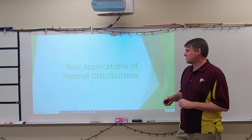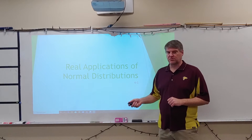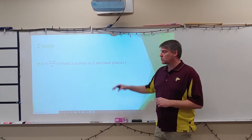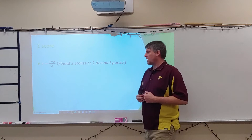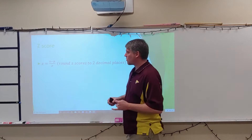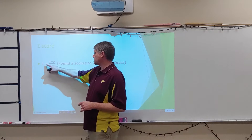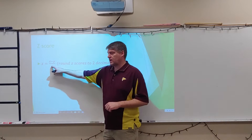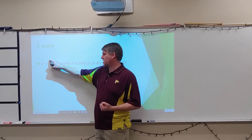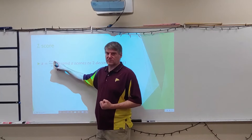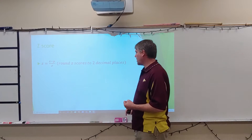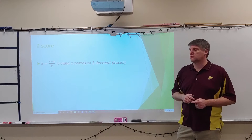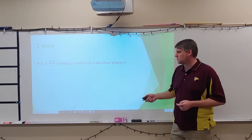We're going to talk about real applications of normal distributions. The z-score formula is z equals x minus mu over sigma — we take our value minus our mean, over our standard deviation. We're going to typically round those z-scores to two decimal places.